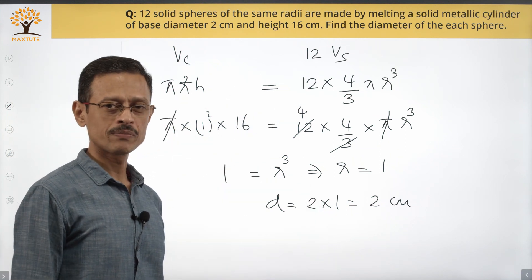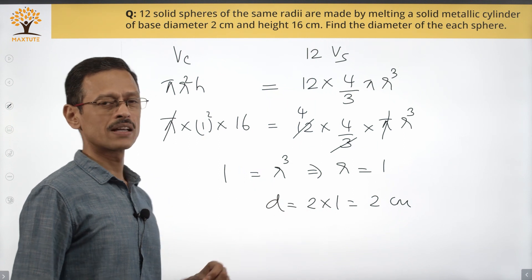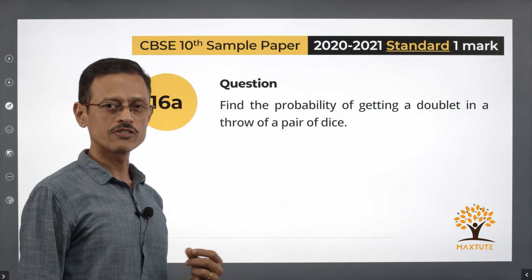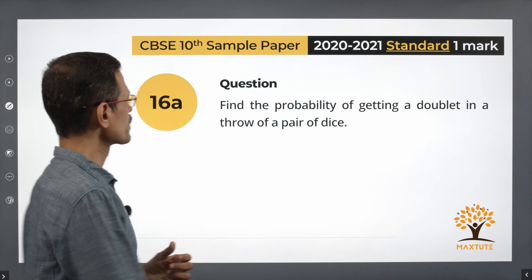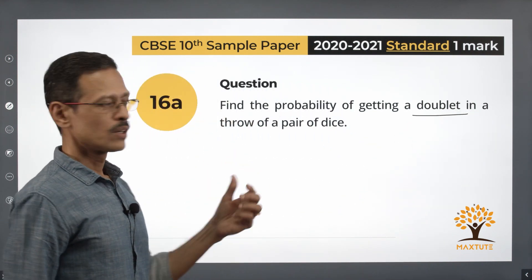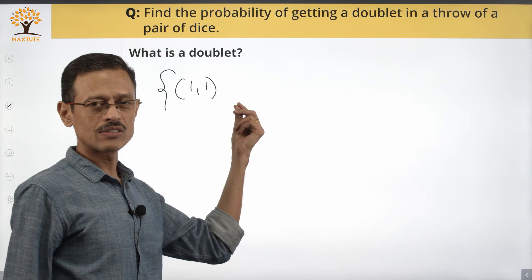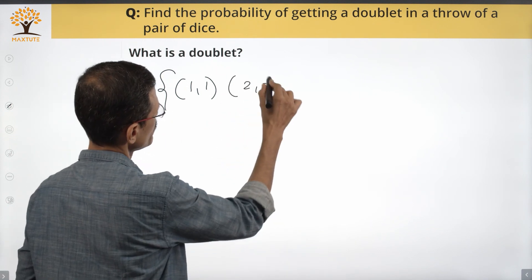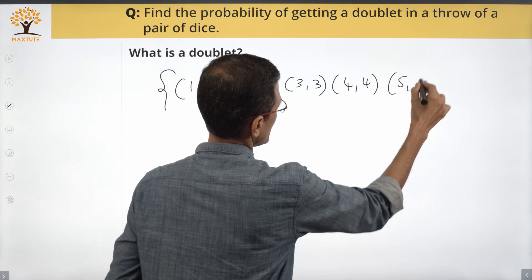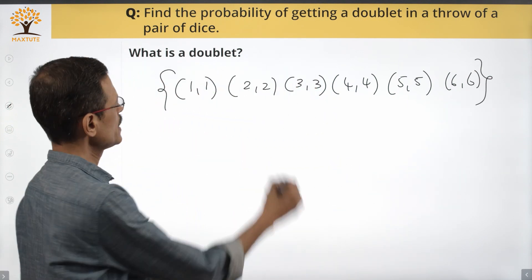Question 16 has two internal choices, both from probability. The first concept tested is rolling a pair of dice — find the probability of getting a doublet. A doublet is an outcome where both dice show the same number: (1,1), (2,2), (3,3), (4,4), (5,5), and (6,6). There are 6 possible doublets.